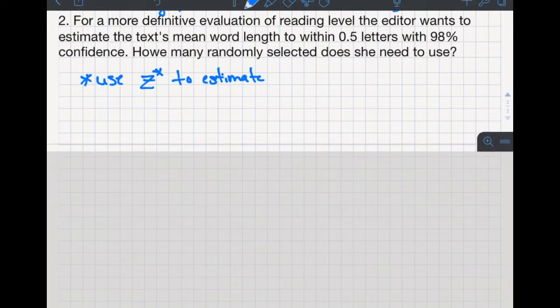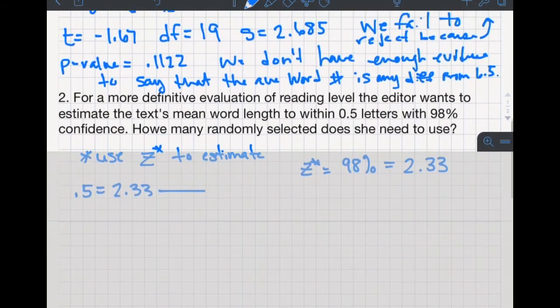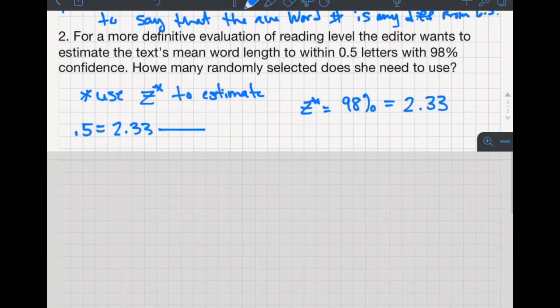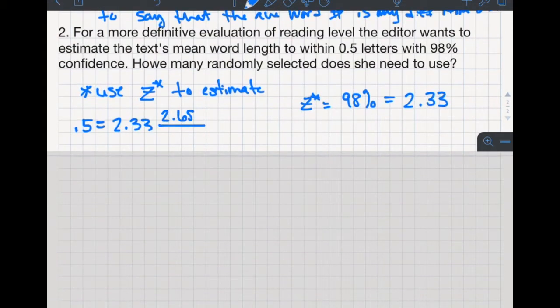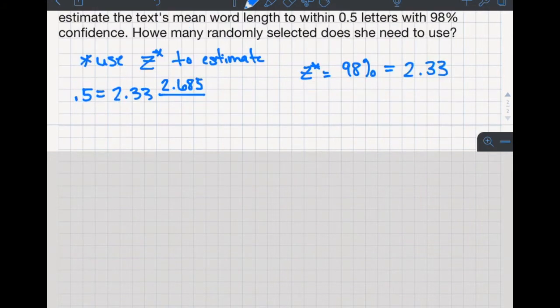If we use z-star to estimate, we can get a better idea. You could even go back and redo it at the end with a t-score, but that's not necessary. We want it to be within 0.5, so that's our margin of error—whenever they talk about 'within' something, that's always the margin of error. Z-star for 98% equals 2.33, so we're going to use 2.33 times our standard deviation, which was 2.685, divided by the square root of n, which is exactly the formula for margin of error.